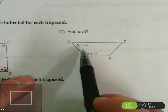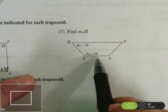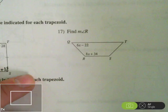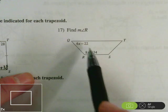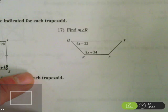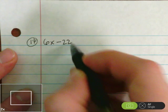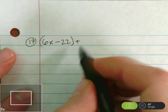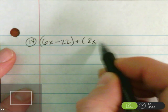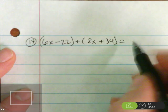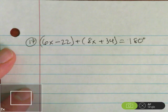Next, we're going to take a look at number 17. And number 17, we've got angle Q is 6x minus 22. And angle R is 8x plus 34. Since they're both at the end of the leg, they should add up to 180 degrees. So 6x minus 22 plus 8x plus 34 equals 180. So let's set that up. 6x minus 22 plus 8x plus 34 equals 180.